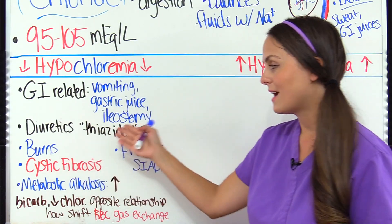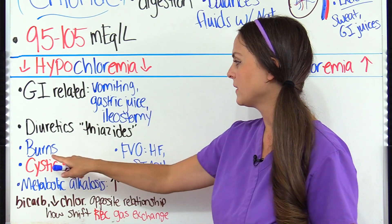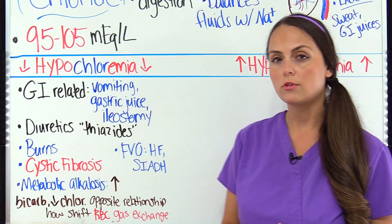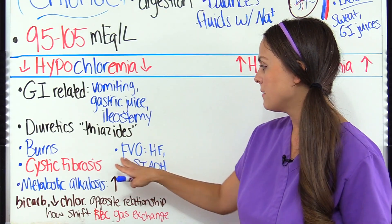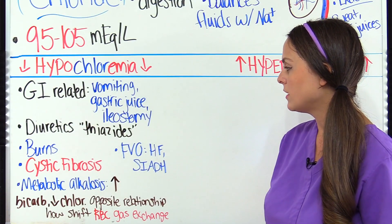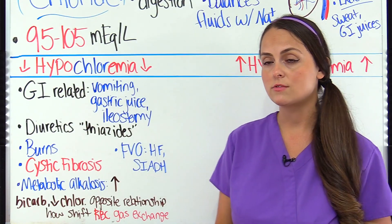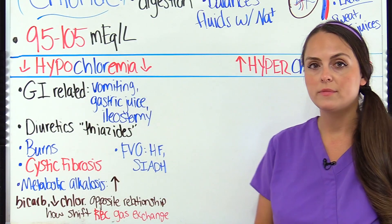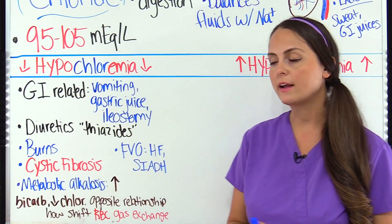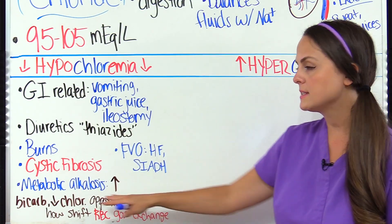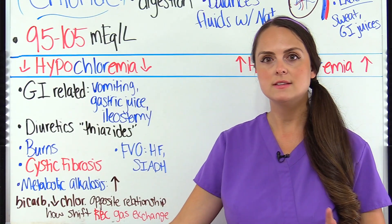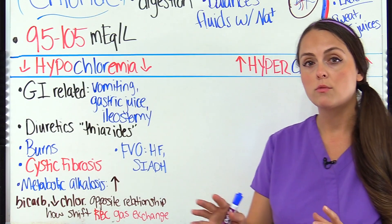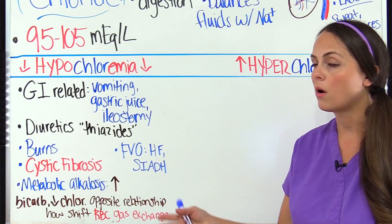Diuretics such as thiazides can cause hypochloremia, similar to hyponatremia. Burns and cystic fibrosis are also causes — with cystic fibrosis, patients lose a lot of chloride especially through their sweat. Patients who have fluid volume overload, like heart failure or SIADH, will have diluted chloride. Metabolic alkalosis can cause this as well, because a high bicarb level will drop the chloride level. This is due to the opposite relationship between bicarb and chloride in how they shift in and out of the red blood cell to help with proper gas exchange.